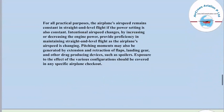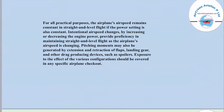For all practical purposes, the airplane's airspeed remains constant in straight and level flight if the power setting is also constant. Intentional airspeed changes — by increasing or decreasing engine power — provide proficiency in maintaining straight and level flight as airspeed changes. Pitching movement may also be generated by extension and retraction of flaps, landing gear, and other drag-producing devices such as spoilers.